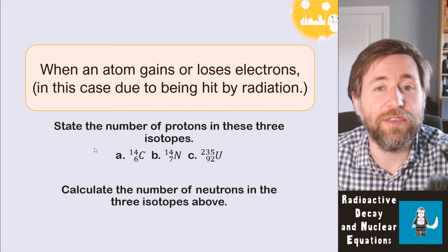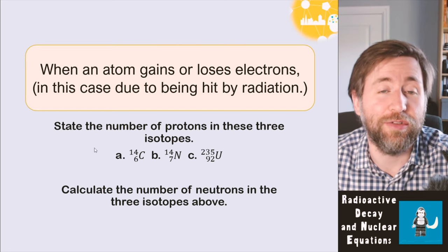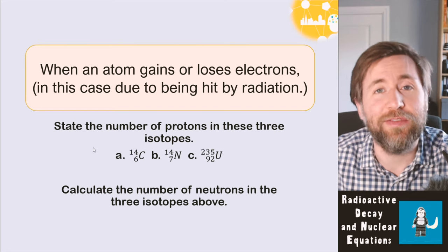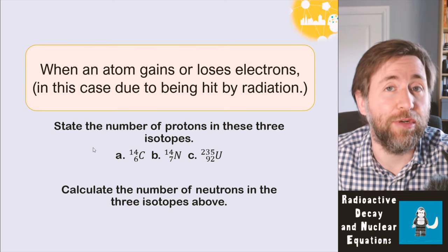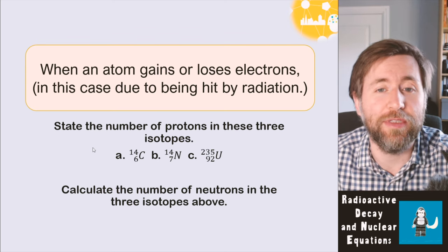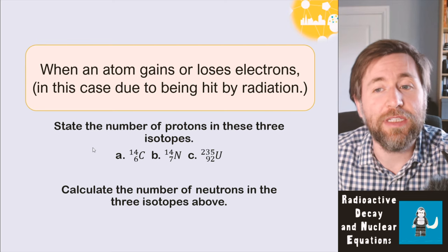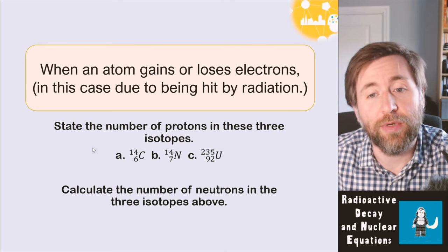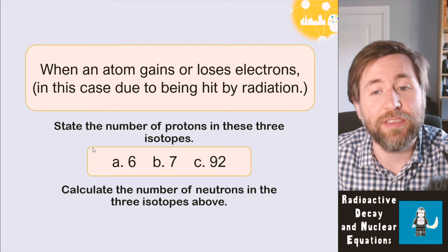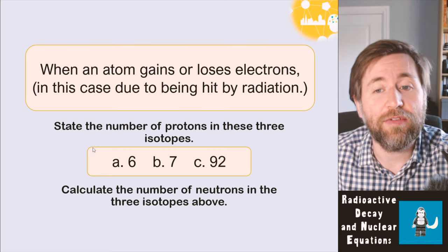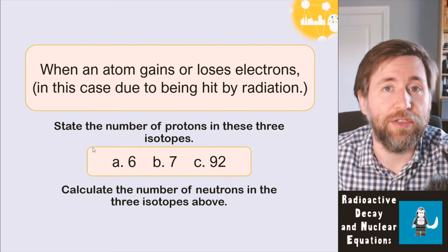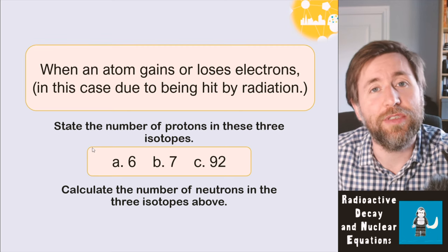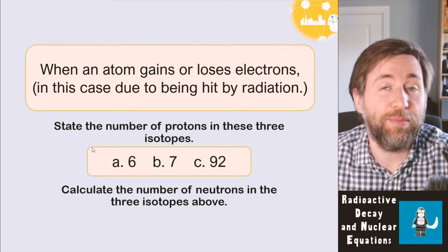The term ionization means when an atom gains or loses electrons. Here we're talking about when it gets hit by a radioactive particle such as an alpha, a beta, or gamma. The number of protons is always the smaller number — in carbon there's six, in nitrogen there's seven, and in uranium there's 92. The larger number, the mass number, is the number of protons plus neutrons.